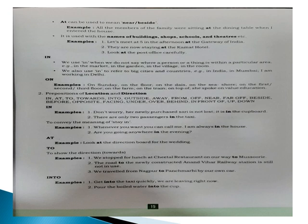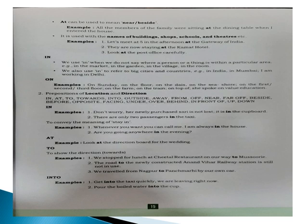We use 'in' when we do not say exactly where a person or thing is within a particular area — for example, 'He is in the market', 'He is in the garden' — the exact place is not given, just the bigger area. We also use 'in' to refer to big cities or countries: 'in India', 'in Mumbai', 'I am working in Delhi' — exact place not given. We use 'on' for: on Sunday, on the floor, on the dais, on the seashore, on the first/second/third floor, on the farm, on the train, on top of, on value education.